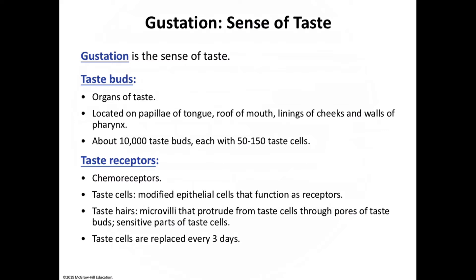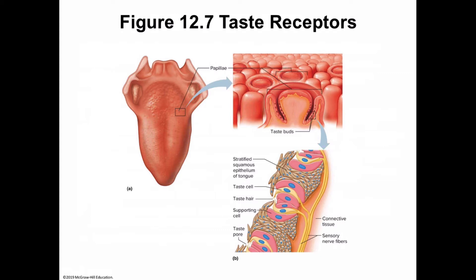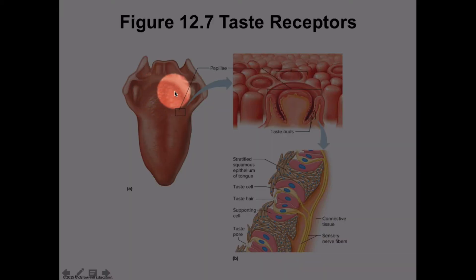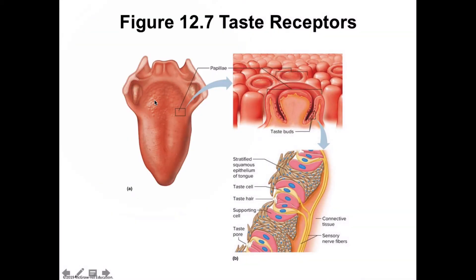The tongue surface looks slightly abrasive because of the papillae. Taste buds are located mainly on the tops of mushroom-shaped fungiform papillae, scattered across the entire tongue surface. We also have foliate papillae on the side walls of the tongue and large round vallate papillae — the largest and least numerous, only about 8 to 12 in number, forming an inverted V at the back of the tongue.